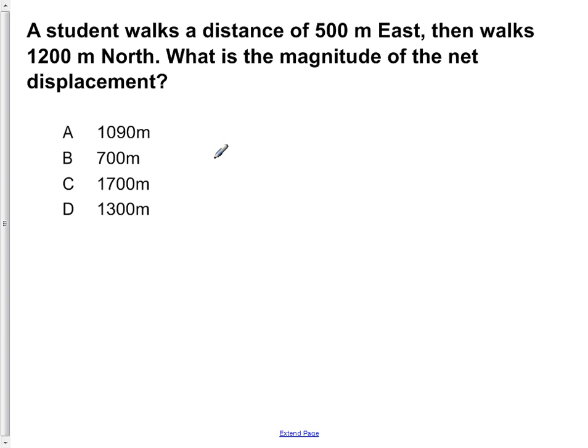A student walks a distance of 500 meters east then walks 1,200 meters north. What is the magnitude of the net displacement?